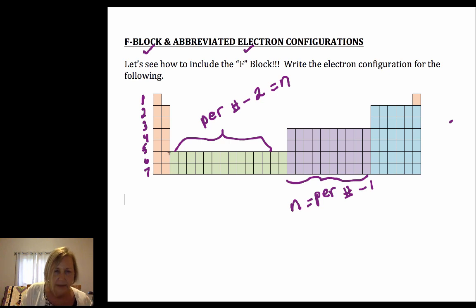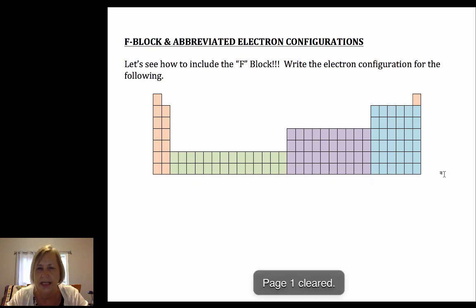Now technically we're going to go from 6s2 right into the F block. This is what the periodic table would look like if it included that F block, those lanthanide and actinide series. And we would go into the F block and then we would go into the D block and then we would go into the P block. But our periodic tables typically don't show this.